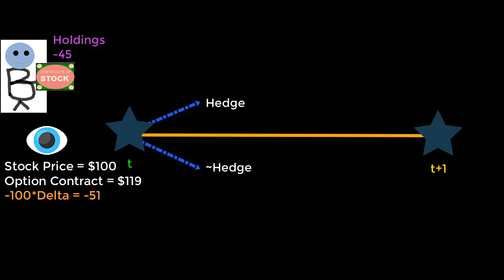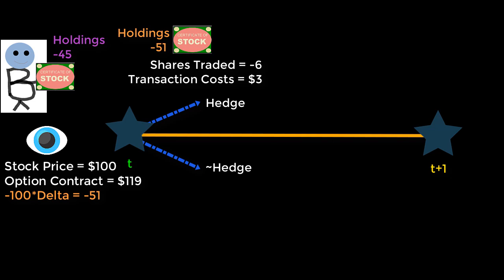If the agent hedges, the new stock holdings are negative 51, calculated using delta. Therefore, the agent has sold 6 stocks, resulting in $3 in transaction costs.